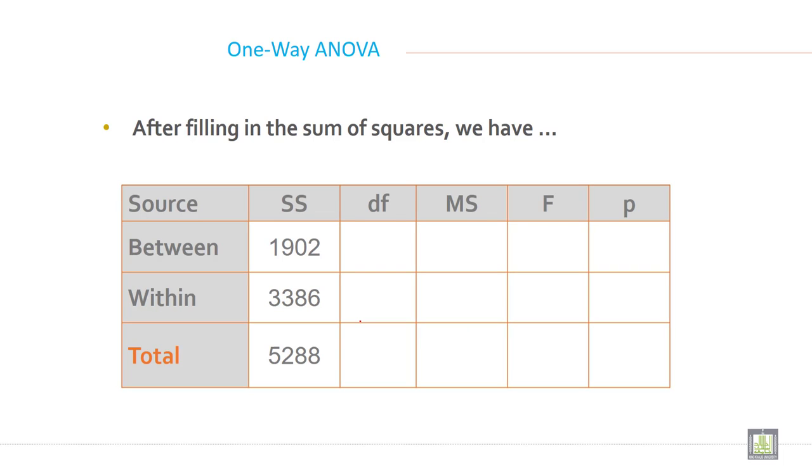After filling all the sum of squares, you have 1902 between group and within 3386, and the total 5288. When you add these two, you will get total as 5288.